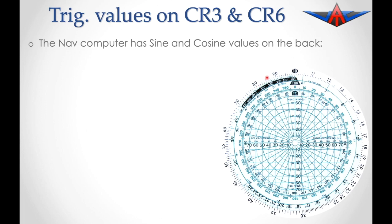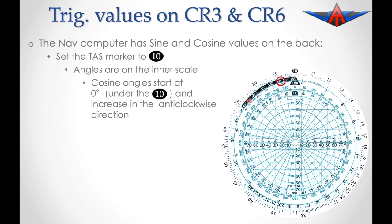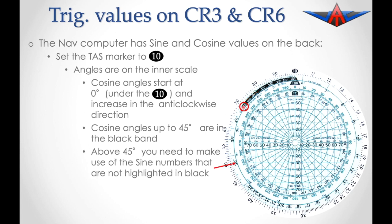Let's have a look at sine and cosine values as they are used on the back of the navigation computer. Our first step is to set the TAS marker directly underneath the 10 marker. The angles are on the inner scale. Cosine values are in the black band, increasing from 0 up to 45 degrees — at 0, 10, 20, 25, 30, 35, 40 and 45 degrees. Above 45 degrees you have to make use of the sine numbers that are not highlighted in black.